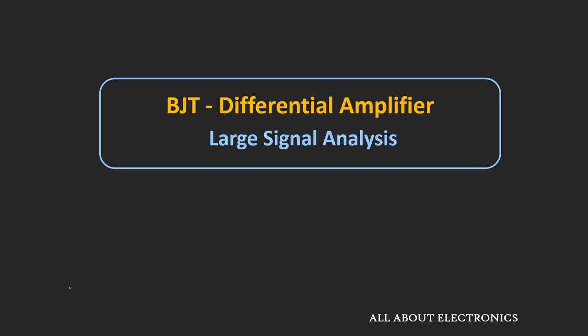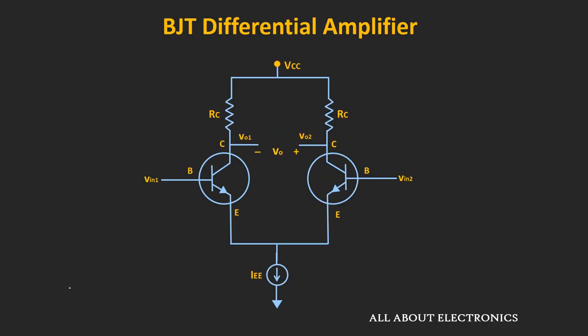Hey friends, welcome to the YouTube channel ALL ABOUT ELECTRONICS. In the previous video, through qualitative analysis, we understood how the differential amplifier rejects the common mode signal and amplifies the differential input signal. We also saw that when the differential input is very small, typically in the range of mV, only then does this differential amplifier work in the linear region. So in this video, through a large signal analysis, let's understand it in detail.